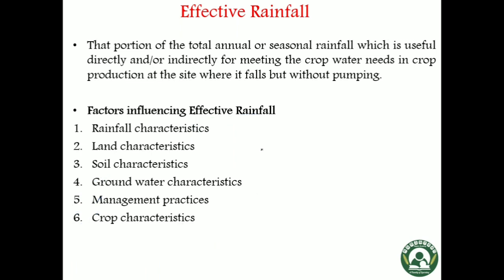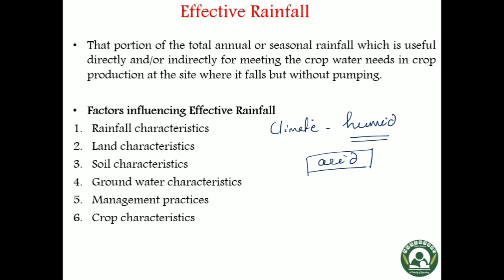Apart from these factors, we can also consider climate and seasons. If the climate is humid, then effective rainfall will be lower compared to arid climate. Because in arid climate, water shortage is there, so any amount of rainfall will be fully contributed towards crop water requirement. In arid regions, 70 percent of total rainfall is effective, while in humid regions, 50 percent of total rainfall is effective.